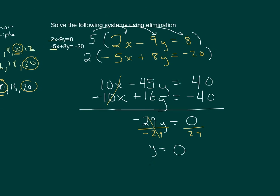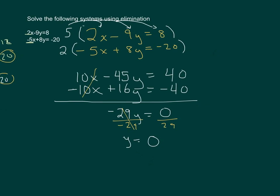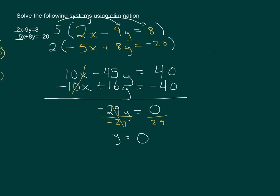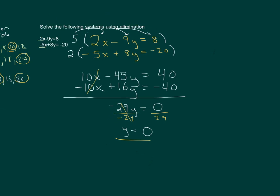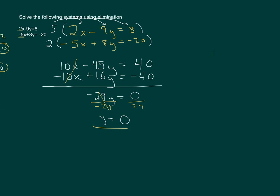Now, remember that the point of intersection, or the solution to this equation, is where they intersect. So we found a y value, but now we have to find the x. So what we're going to do is we're going to take either one of our original equations. I'm going to use 2x minus 9y equals 8. So let's go ahead and recopy that. 2x minus 9y equals 8. And I know where I have y, we know that y is equal to 0. So I'm going to go ahead and plug that in.